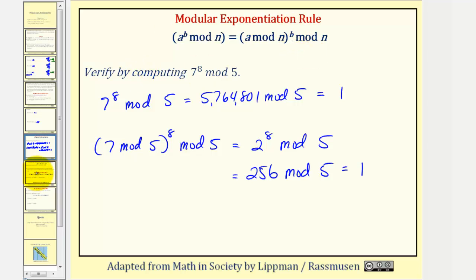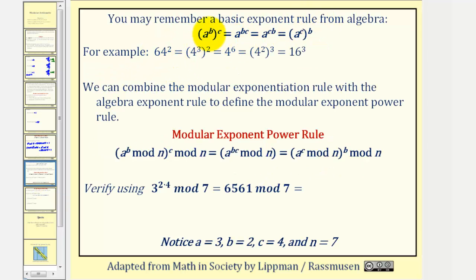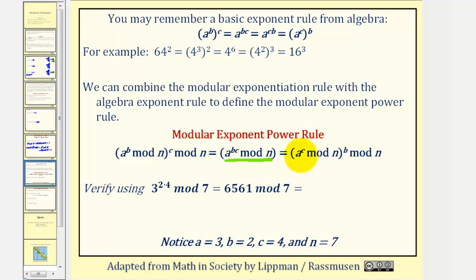Let's look at one more exponent rule. From algebra, a raised to b raised to c equals a raised to b times c, so powers raised to powers means we multiply the exponents, and the order of multiplication can be changed. Combining this with the modular exponent rule gives the modular exponent power rule: a raised to b times c mod n equals a raised to b mod n, raised to c mod n, which also equals a raised to c mod n, raised to b mod n.